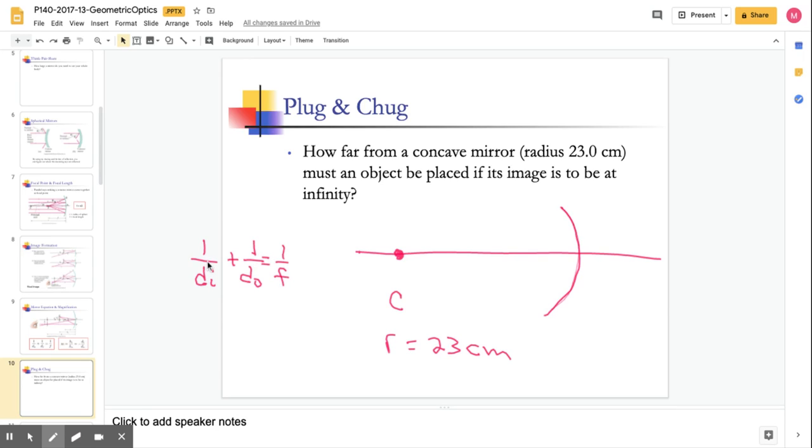So, we can say 1 over di plus 1 over d0 is equal to 1 over f. If we want to figure out where we need to put our image, what is di? We want di to be at infinity. Remember, 1 over infinity is equal to 0. So, if this becomes 0,